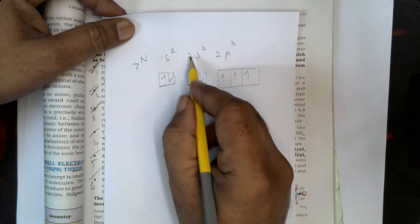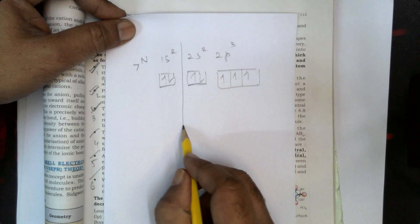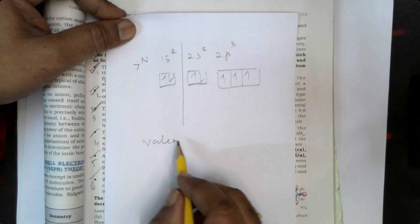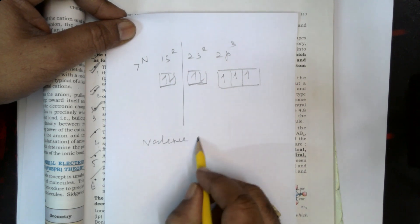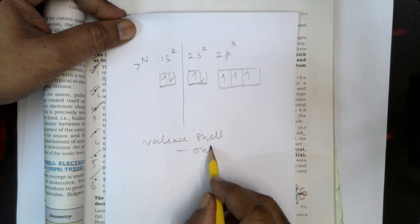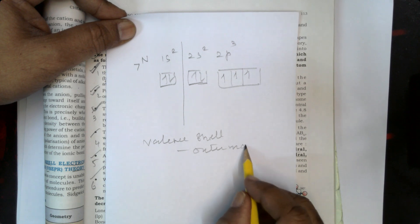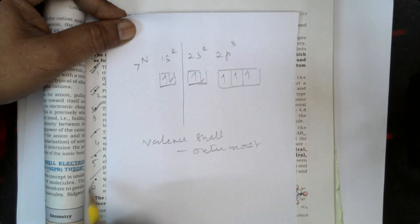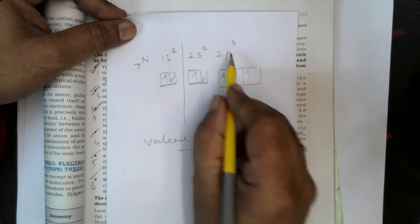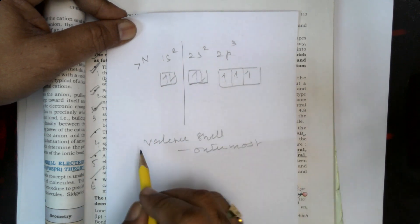What is the valency shell? It is the outermost shell. Valency shell means the outermost, or ultimate exterior shell. For nitrogen, the outermost shell is the second shell. The electrons there are three (in 2p) plus two (in 2s), giving five valence electrons total.